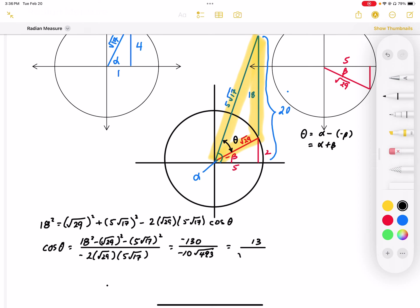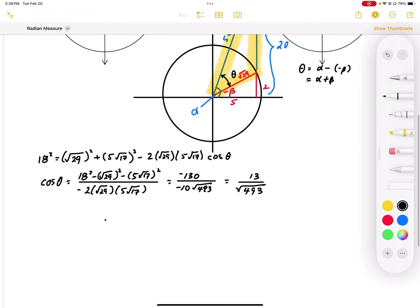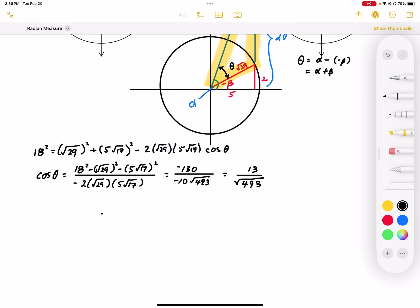Simplified, this becomes 13 over square root 493. So now we can solve for cosine theta.